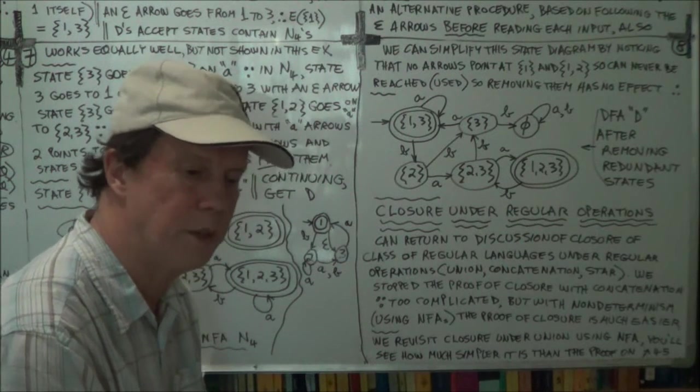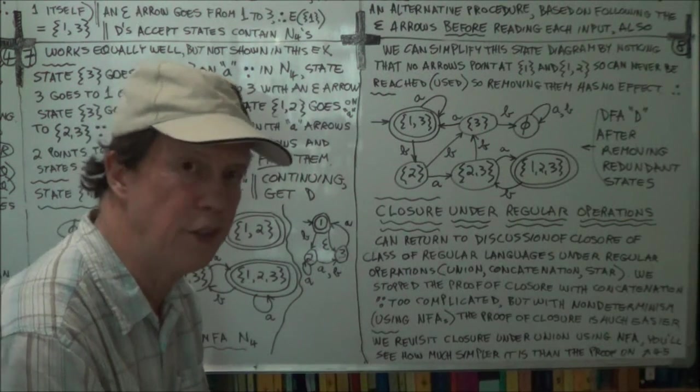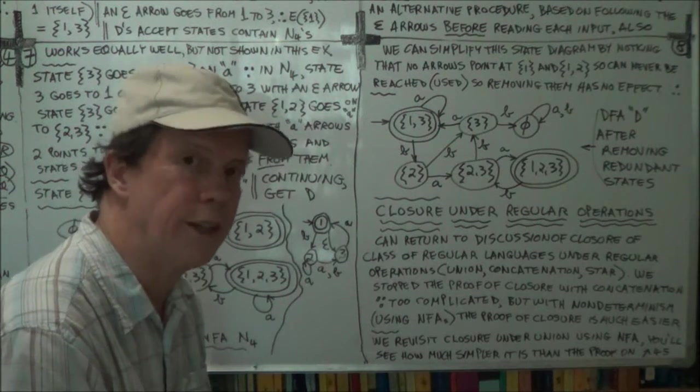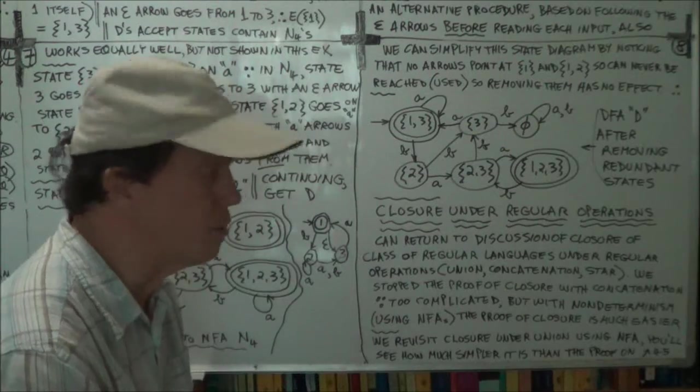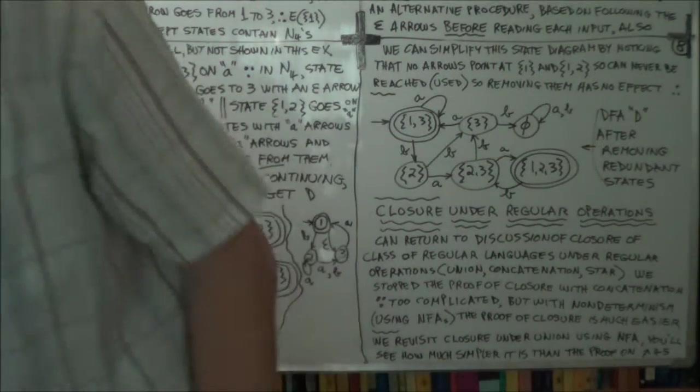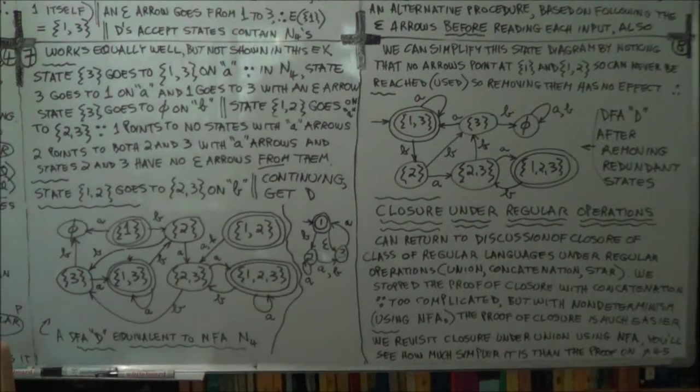So we'll go back to proving that union is closed. Regular languages are closed under the operation, regular operation of union. But this time we'll use NFAs, we'll use non-determinism, and you'll see how much simpler the proof is.